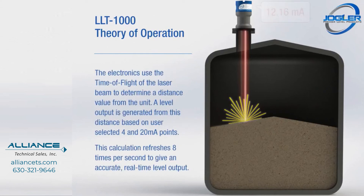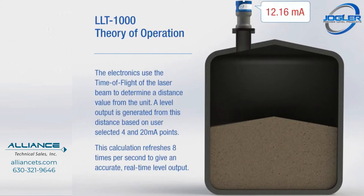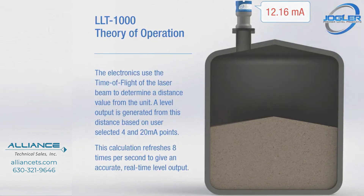The electronics use the time of flight of the laser beam to determine a distance value from the unit. A level output is generated from this distance based on user-selected 4 to 20 milliamp points. This calculation refreshes 8 times per second to give an accurate, real-time level output.